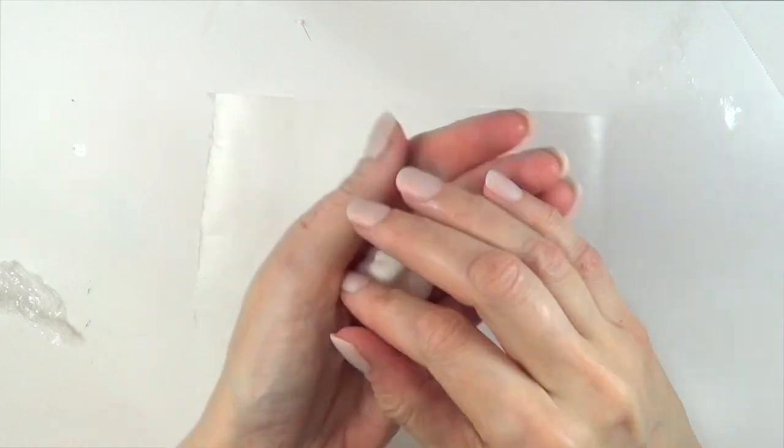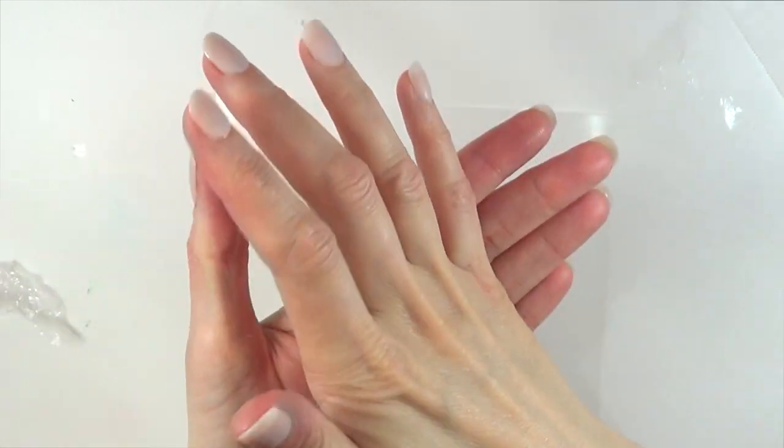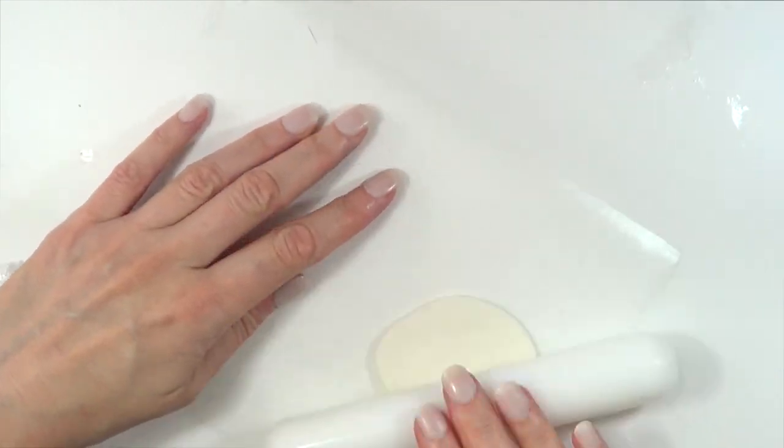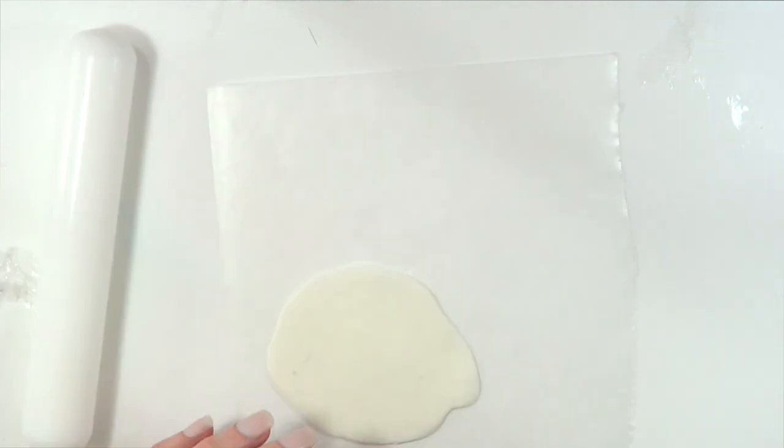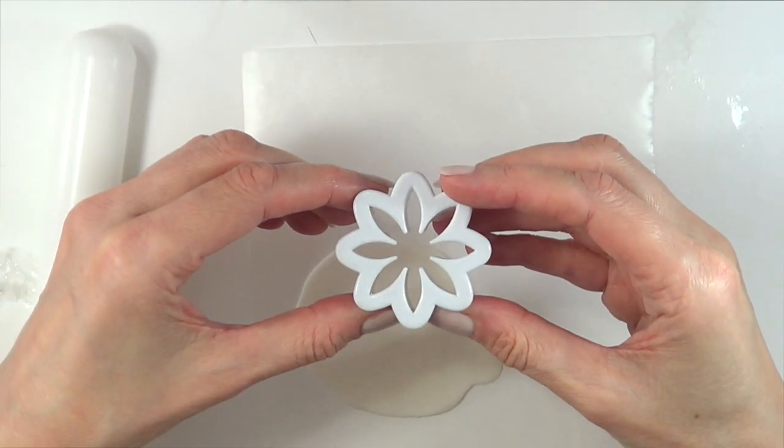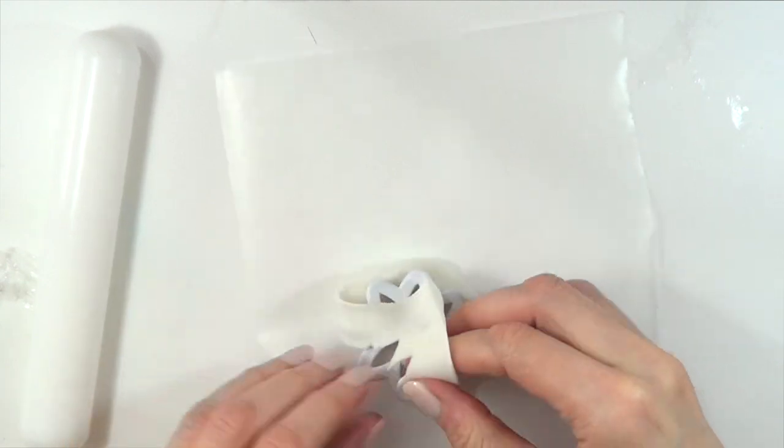The first thing we're going to be using is fondant. I do have the review for this one, it's the one by Wilton. I'm going to take this much and place it on top of some wax paper and roll it. I'm just going to be taking this daisy cookie cutter and cut it and just remove the excess.